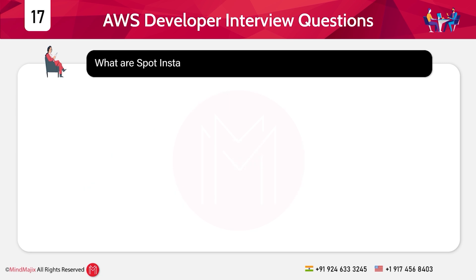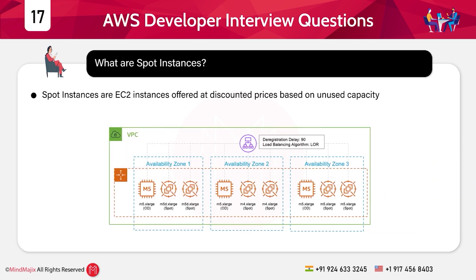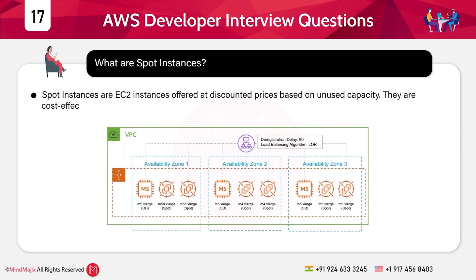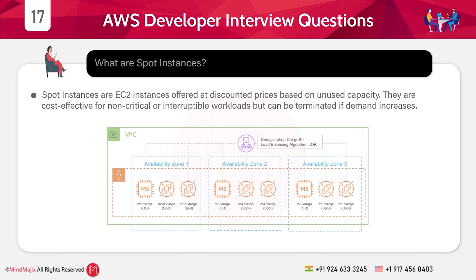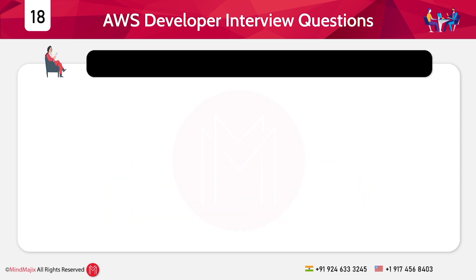Question 17: What are spot instances? Answer: Spot instances are EC2 instances offered at discounted prices based on unused capacity. They are cost-effective for non-critical or interruptible workloads but can be terminated if demand increases.